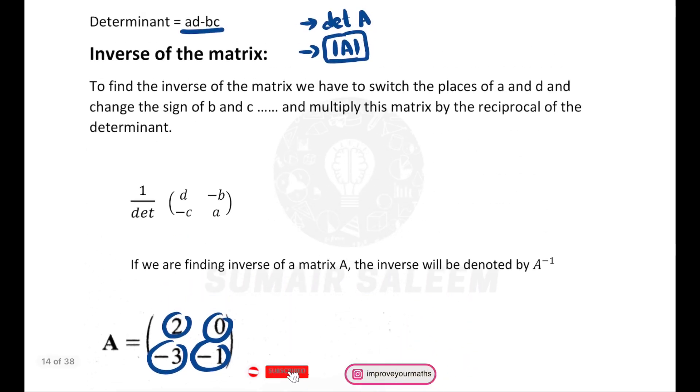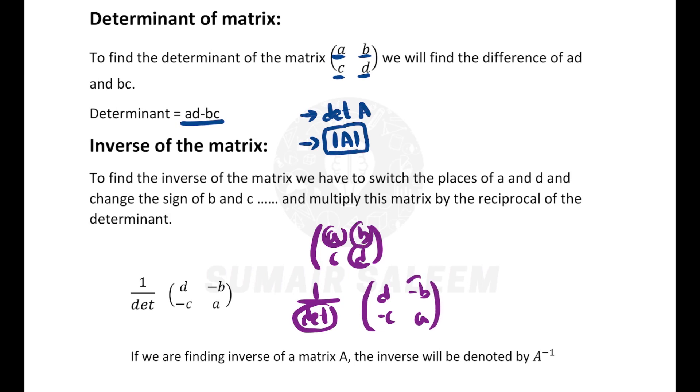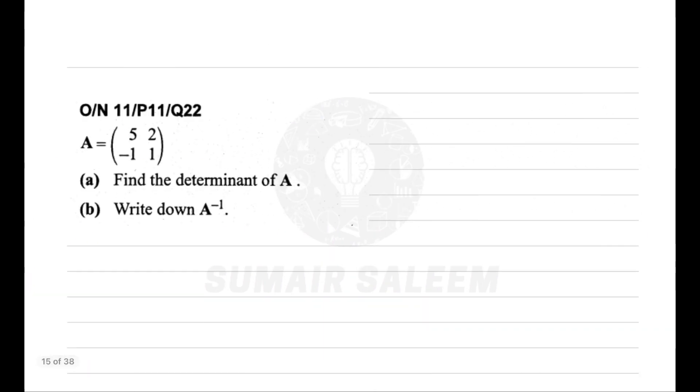Then comes how to find the inverse of the matrix. The matrix is given to me ABCD. Its inverse is 1 upon determinant, that's AD minus BC. Then you switch the places of A and D, so A will become D, and you change the signs of B and C. If it was minus, it becomes plus.